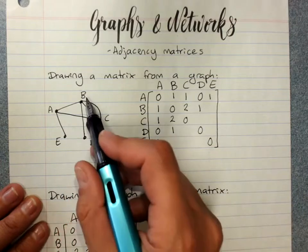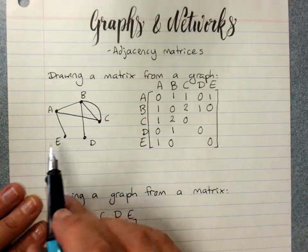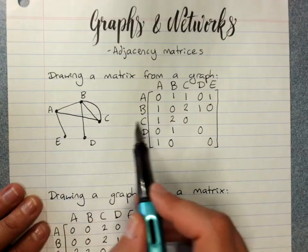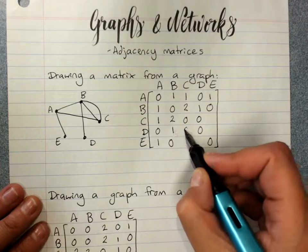So D to B has one. B to E, none. So E to B, none. C to D, none.